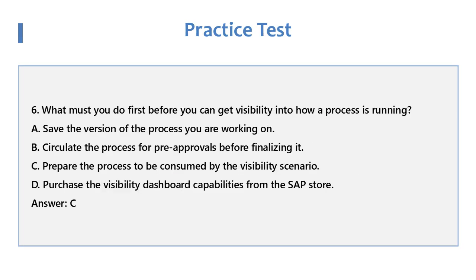Question 6: What must you do first before you can get visibility into how a process is running? A. Save the version of the process you are working on. B. Circulate the process for pre-approvals before finalizing it. C. Prepare the process to be consumed by the visibility scenario. D. Purchase the visibility dashboard capabilities from the SAP Store. Answer: C.